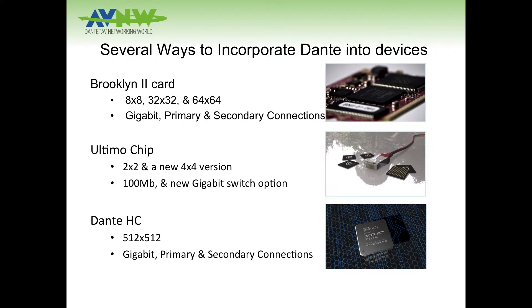There are several different hardware ways we provide that. The most popular at the moment is the Brooklyn II card. Why Brooklyn? It's an Australian company — they named it after a bridge. Since there was a Brooklyn II, there was a Brooklyn I, so this was the second generation of the card. It's available to manufacturers as an 8x8, 32x32, or 64x64 transmit and receive configuration. It's gigabit and has primary and secondary connections, so devices that have redundancy — that can be used in a redundant network — are typically using the Brooklyn II card.